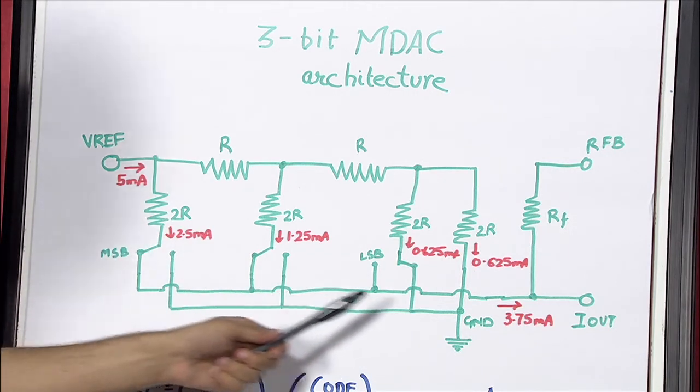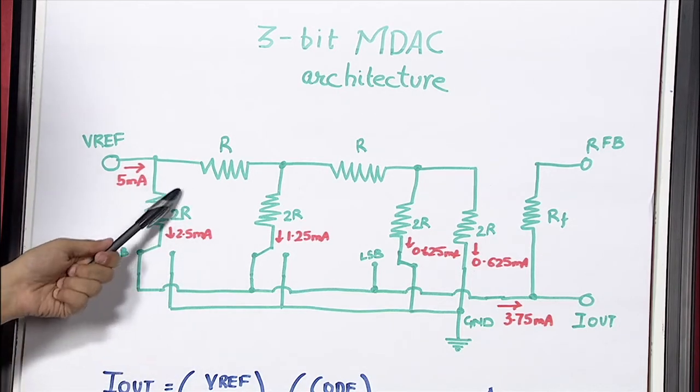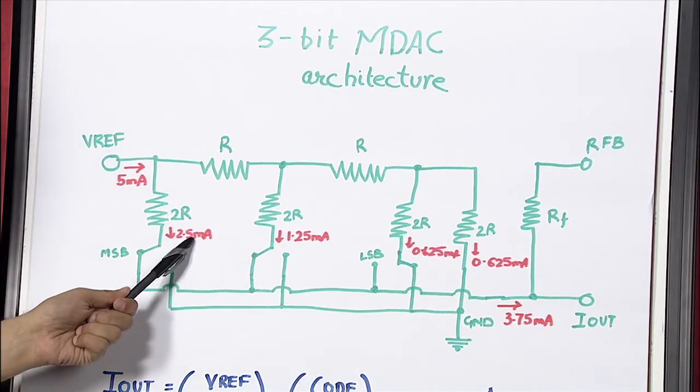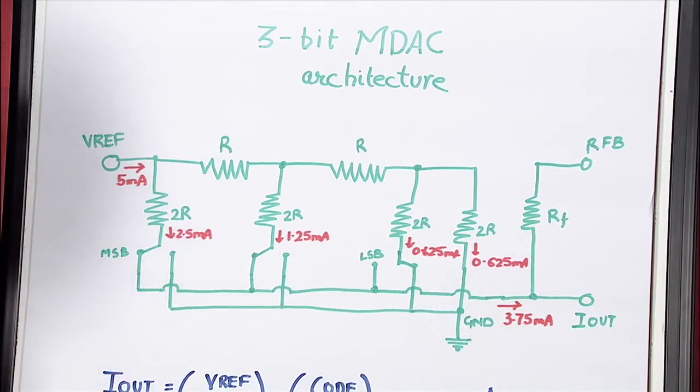Now, calculating the current flowing into IOUT is quite simple. All you do is sum this current and this current 2.5 plus 1.25. That gives you 3.75 mA of current flowing into the IOUT pin.